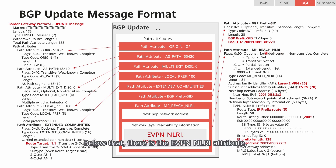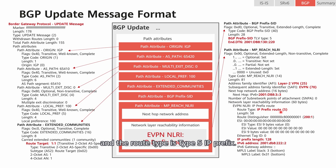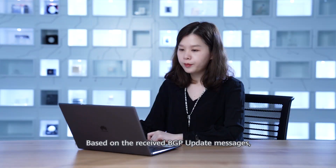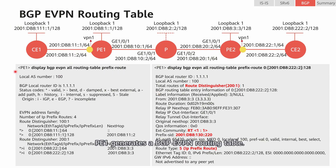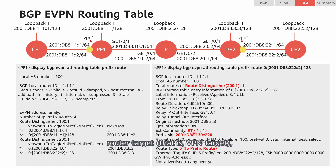Below that, there is the EVPN NLRI attribute, which indicates that the primary address family is L2VPN and the sub-address family is EVPN. The next-hop of the route is the loopback interface address configured on P2, and the route type is Type 5 IP prefix. In addition, the attribute carries the RD, which is the RD of the VPN instance configured on P2. The highlighted part shows information about the route advertised from C2 to P2. Based on the received BGP Update messages, P1 generates a BGP EVPN routing table. The command output shows that the specified route is already contained in the BGP EVPN routing table of P1, carrying RD, Route Target (VPN Target), End.DT6 SID, and route type information.